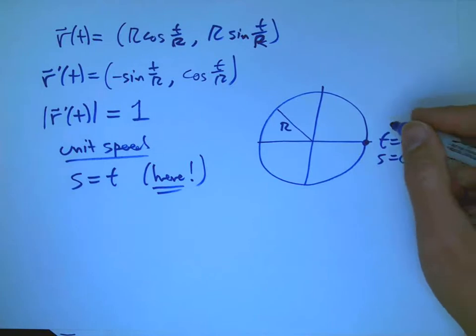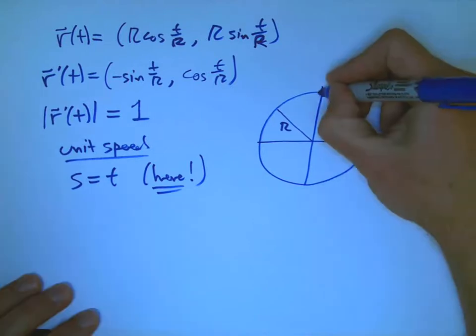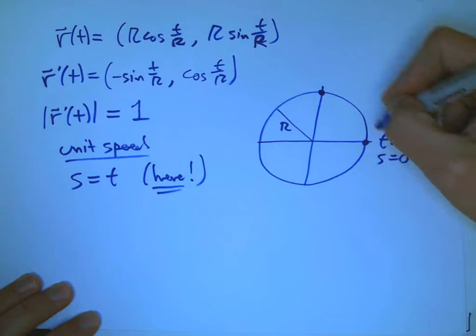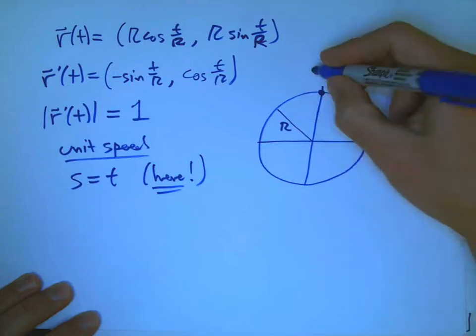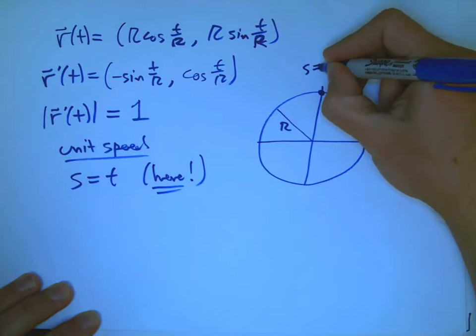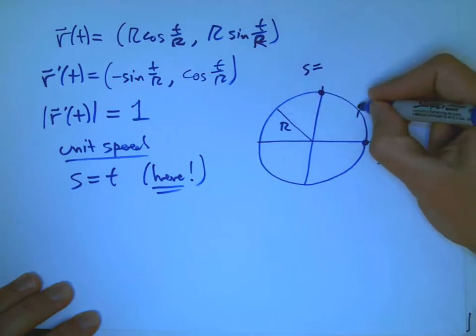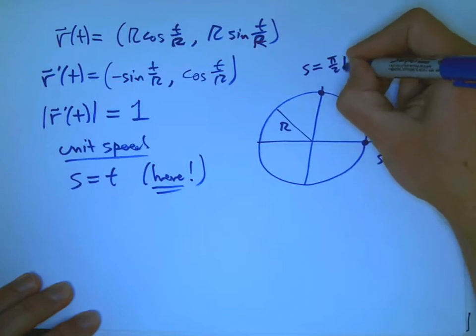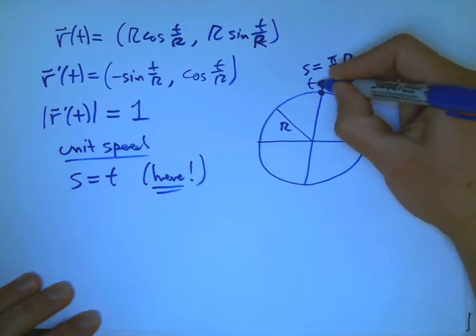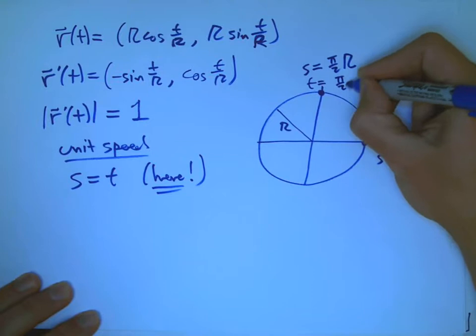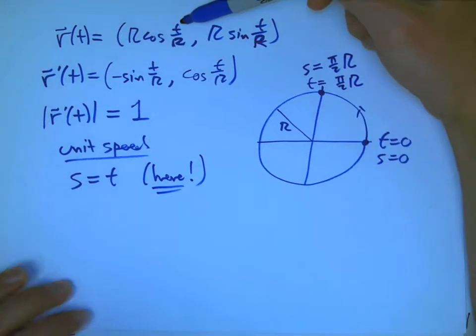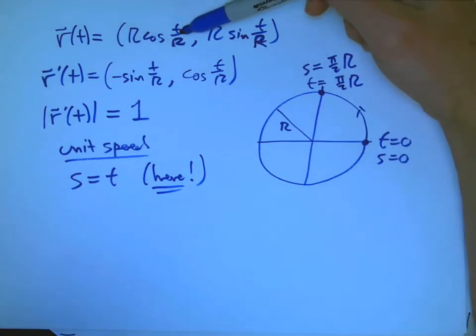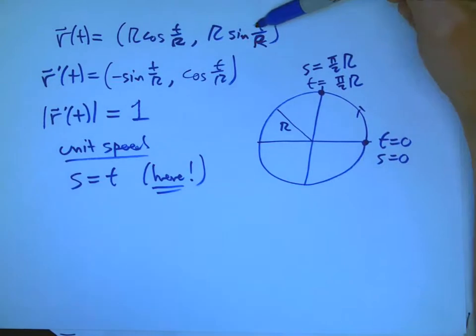So for example, like up here, where is this going to be? This is going to be, if this is a quarter circle of radius r, this is going to be where the length so far going from here to here is going to be pi over 2 times r. And we know that that's also going to be where t is pi over 2 times r. Let's check that. If we put pi over 2 r in here, the r's will cancel and I will get cosine pi over 2, sine pi over 2, and that gives me exactly the top of the circle.